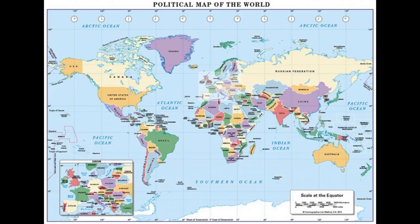In 1569, Mercator designed a map that could be accurately used for navigation purposes. But the downside was that his system distorted the size of objects depending on their position relative to the equator. Land masses like Antarctica and Greenland appeared much larger than they actually are.